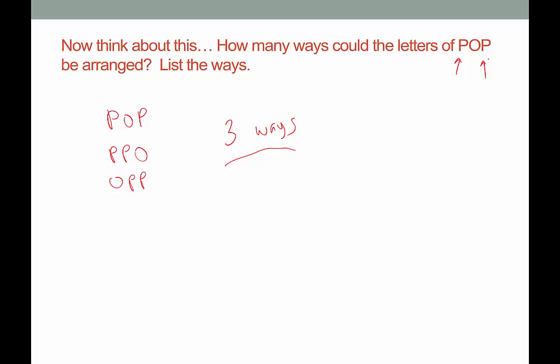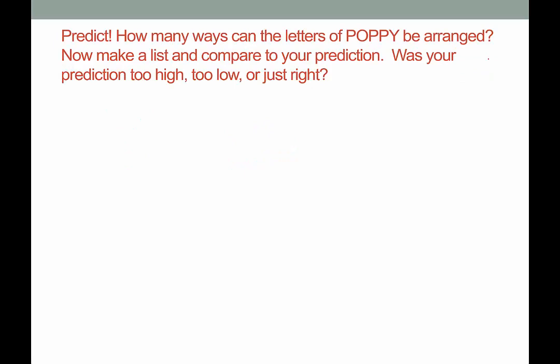So we need to come up with something to figure this out, because I don't want to have to sit here and list combinations. Let's look at the next example: we have the letters POPPY — P-O-P-P-Y. How many ways could these letters be arranged? I want you to pause the video, make a prediction, and see if your prediction was too high, too low, or just right, based on what we know about factorials and the fact that there is some repetition.